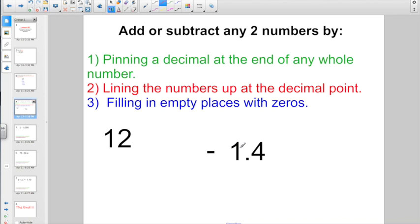If I was going to try to subtract 12 minus 1 and 4 tenths, well, if I have 1 and 4 tenths here, I better put a decimal point on the end of that whole number. Then I'm going to go and take my 1 and 4 tenths, lining them up at the decimal point. And then I can get ready to go and subtract after I go and fill in empty places with zeros.